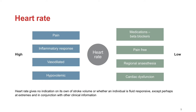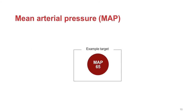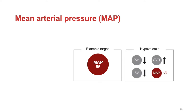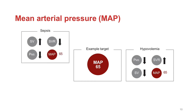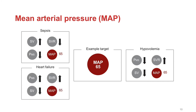Blood pressure is used to guide fluid therapy by over three quarters of clinicians. However, absolute blood pressure does not tell us about a patient's haemodynamic situation. For example, a patient with a mean arterial pressure of 65 mmHg could be euvolemic, or hypovolemic with a high systemic vascular resistance compensating for low stroke volume, or could have sepsis with a high stroke volume, reduced SVR and low filling pressure, or heart failure with a low stroke volume compensated by high SVR and high mean systemic filling pressure. Given that mean arterial pressure is determined by cardiac output and systemic vascular resistance, a static blood pressure measurement does not reliably indicate fluid status.